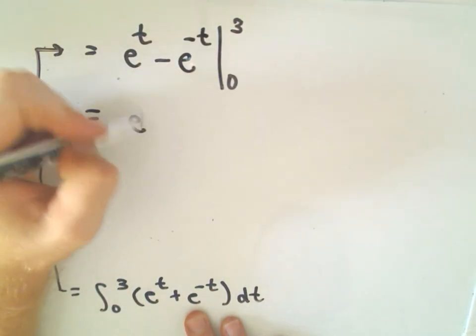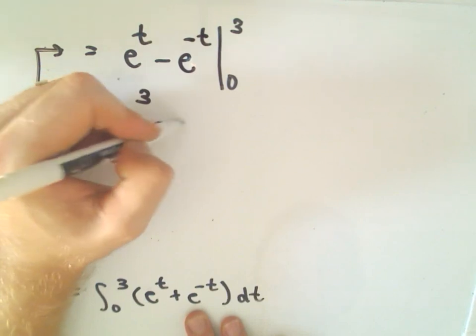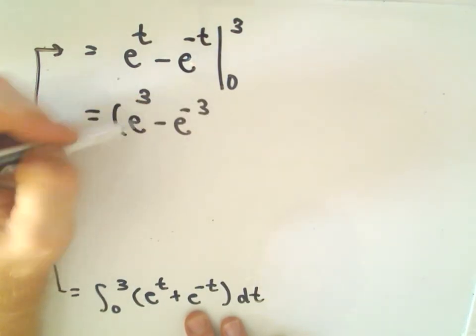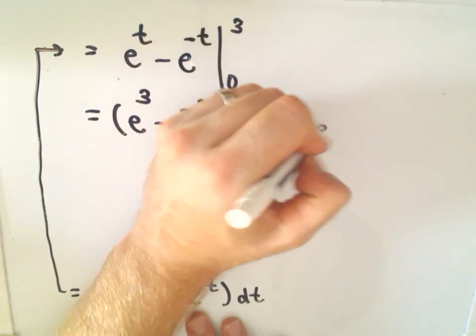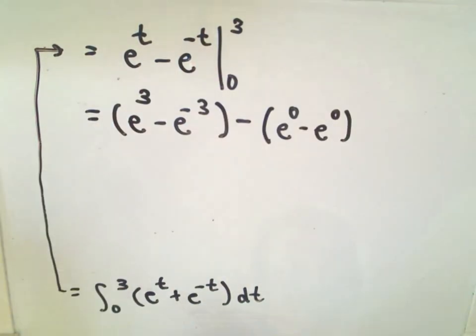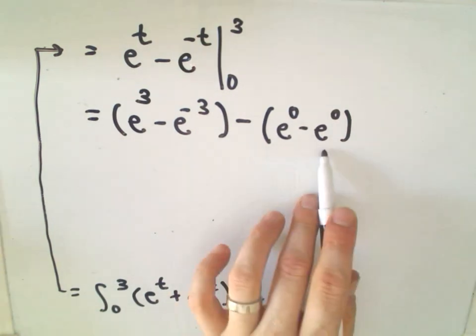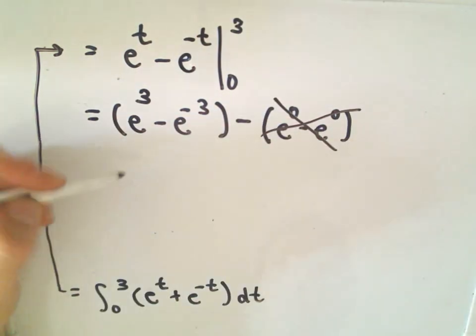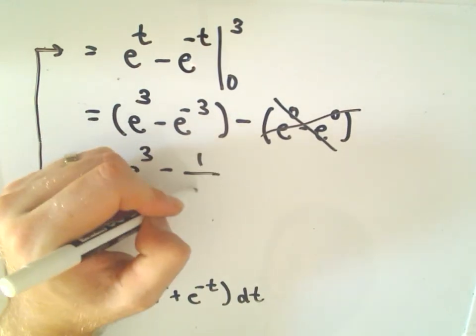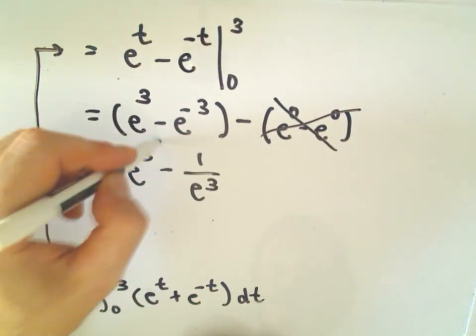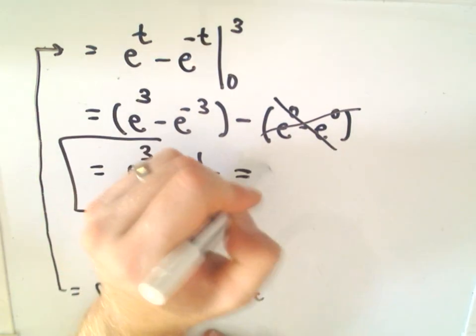Okay, so upper limit e cubed minus e to the negative third power, minus our lower limit. We would get e to the 0 minus e to the negative 0, which is e to the 0. So we're going to get 1 minus 1, and that will cancel out. And our final answer will be e cubed minus 1 over e to the third power. That'll be our arc length in this problem.